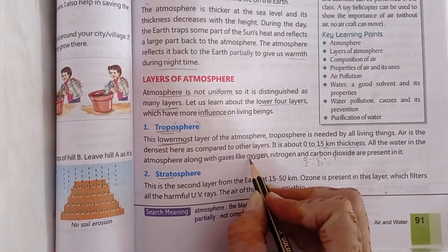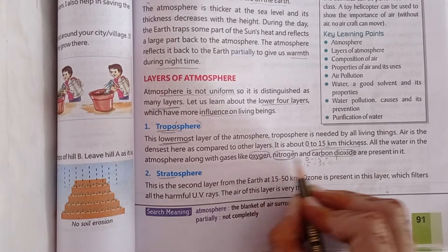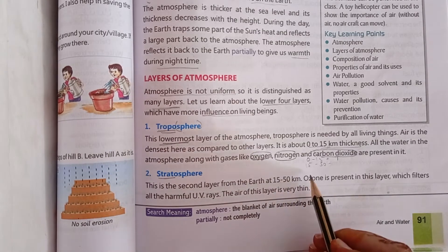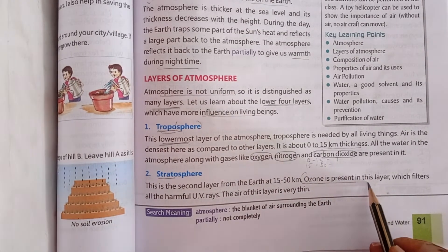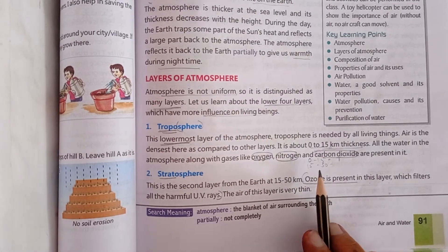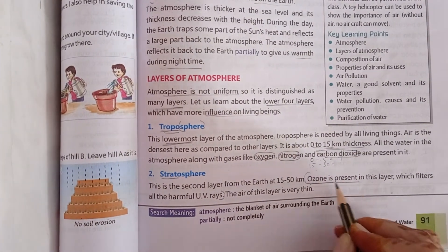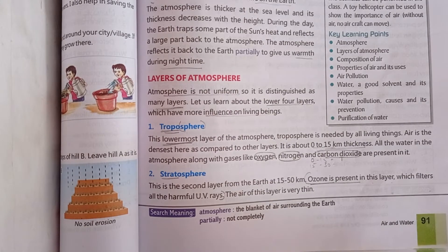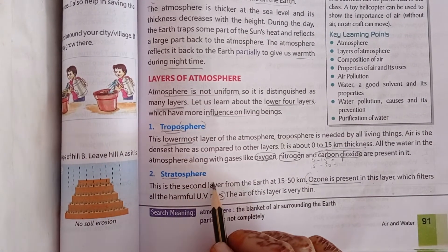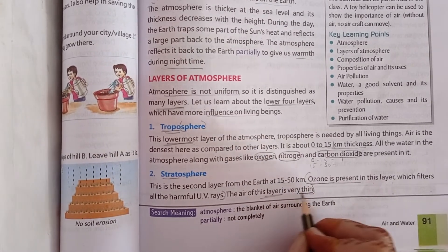Ozone is present in this layer. In the troposphere we have oxygen, nitrogen, and carbon dioxide. Ozone is found in the stratosphere, between 15 to 50 km. Ozone filters all the harmful ultraviolet rays of the sun. The air of this layer is very thin, compared to the dense air of the troposphere.